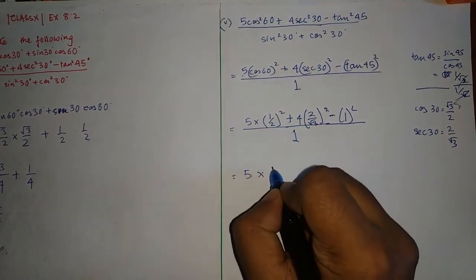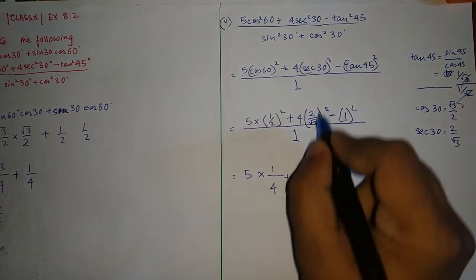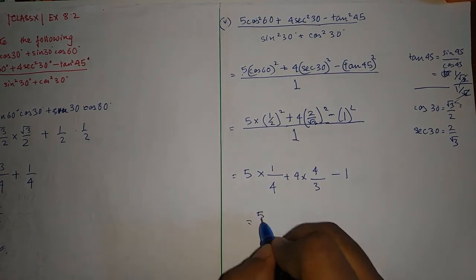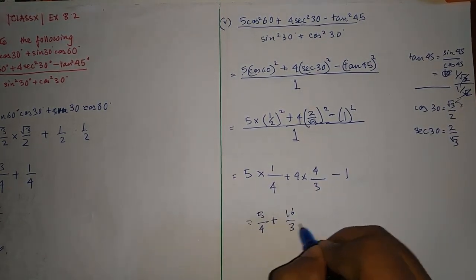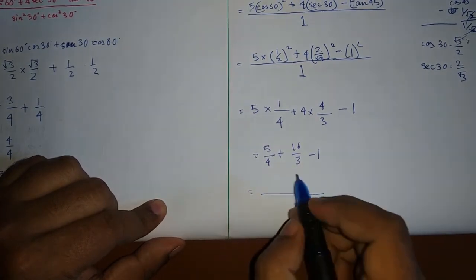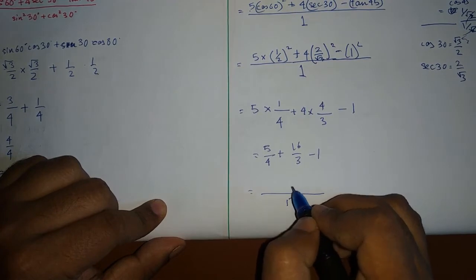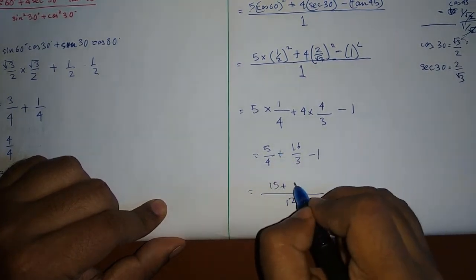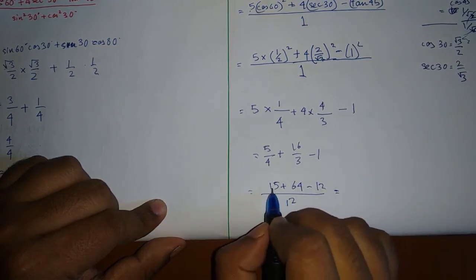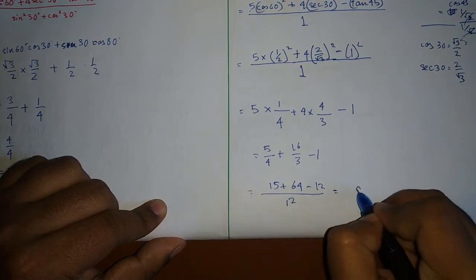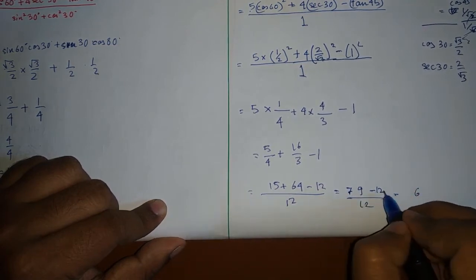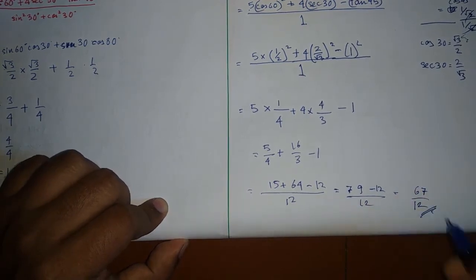Breaking the squares: 5 × (1/2)² = 5 × 1/4 = 5/4. Then 4 × (2/√3)² = 4 × 4/3 = 16/3. Minus 1² = 1. Taking LCM of 4, 3, and 1 which is 12: numerator becomes 15/12 + 64/12 − 12/12 = 67/12. The final answer is 67/12.